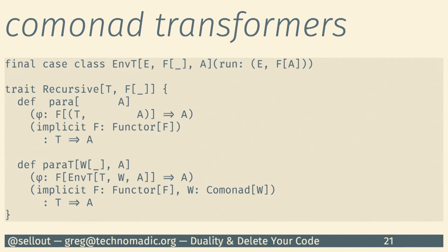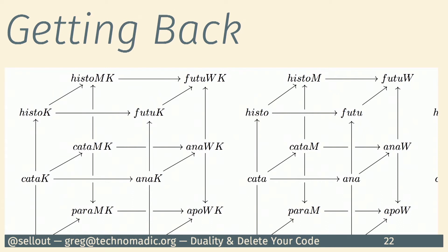So how do we take this massive thing that doesn't fit on the screen and try to get it back to something reasonable? That's what I'm trying to show here — how we can use things that maybe we think of as too abstract (category theory and such) and actually apply those ideas to eliminate tons of effectively duplicated code.